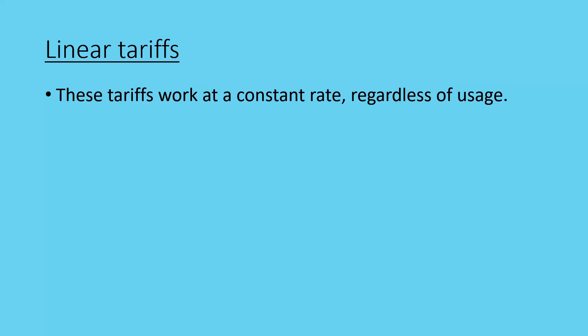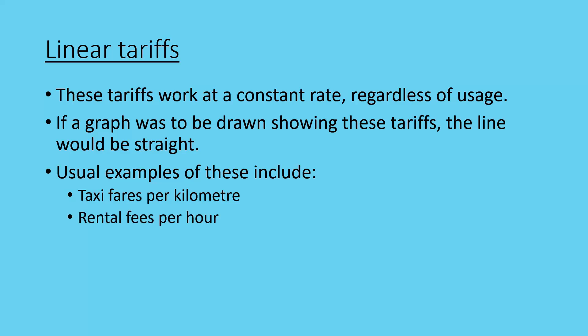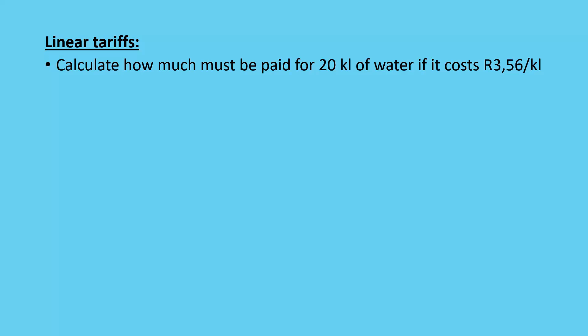Linear tariffs work at a constant rate regardless of usage. They're sometimes called straight-line tariffs because if you were to graph them, the line would be straight. Typical examples include taxi fares per kilometre, rental fees per hour, and telephone call fees per minute. To calculate the cost, for example how much must be paid for 20 kilolitres of water at R3.56 per kilolitre, you simply multiply the usage by the price per unit to get the total price.